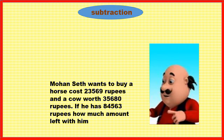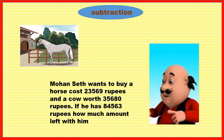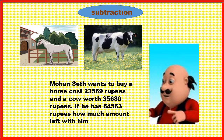Hello children, look — this is Mohan Seth. What does he want to buy? Mohan Seth wants to buy a horse costing 23,569 rupees and a cow worth 35,680 rupees. Children, if he has 84,563 rupees, how much amount is left with him?